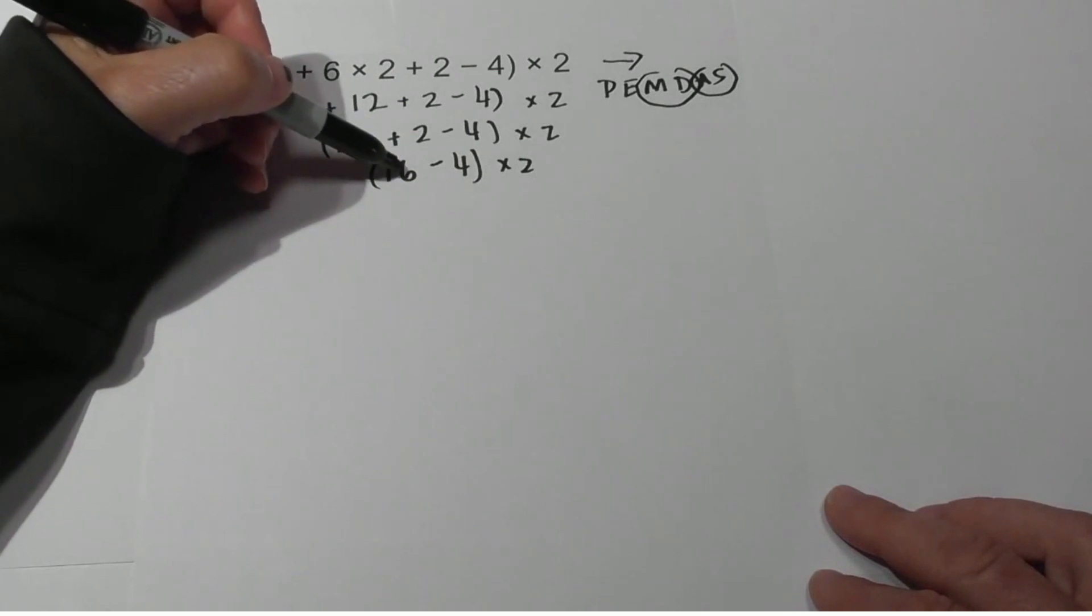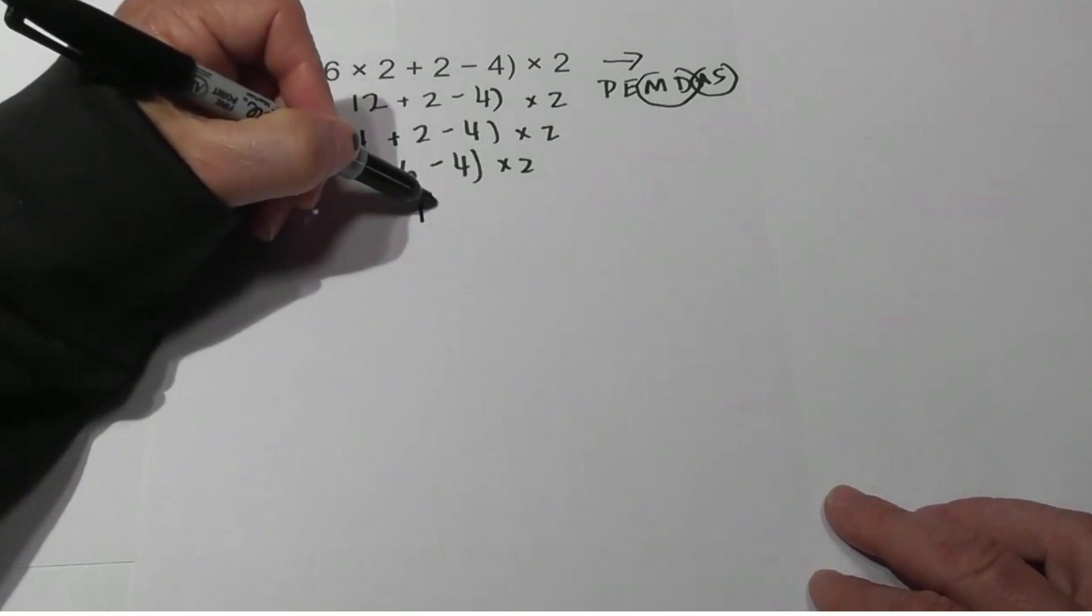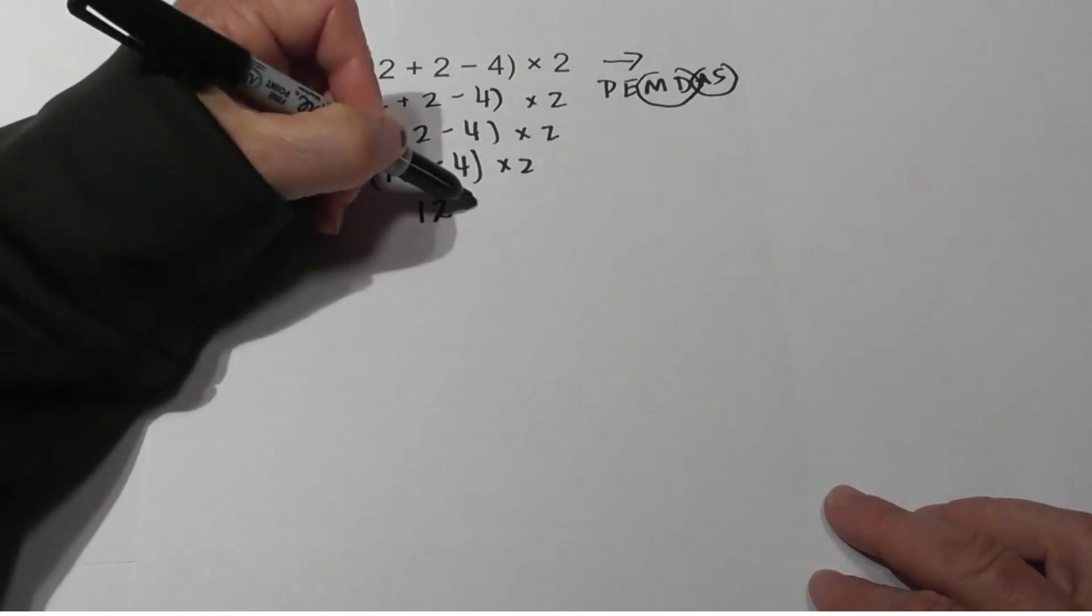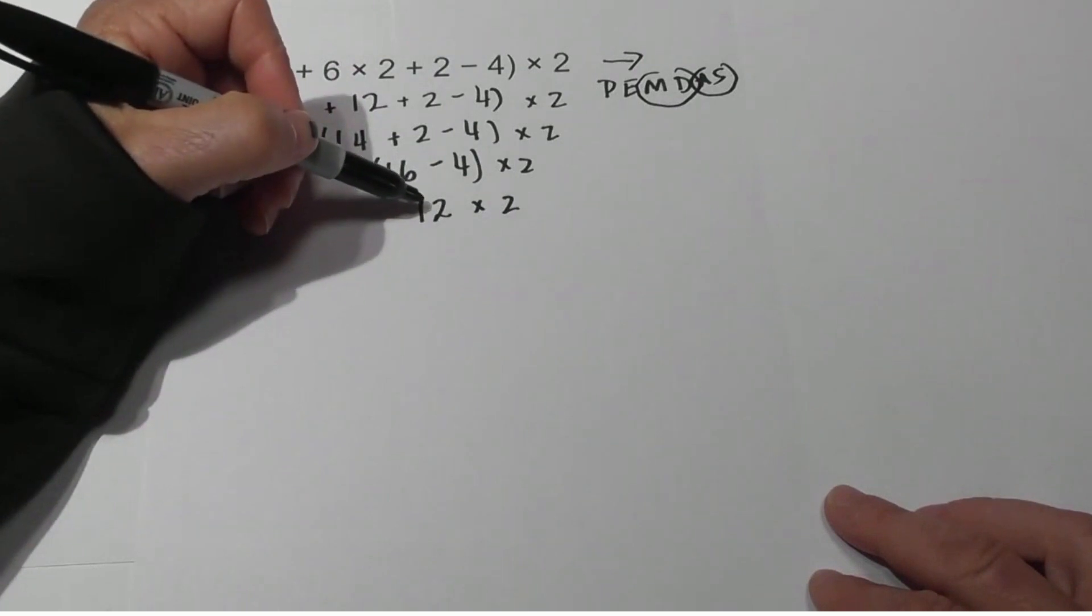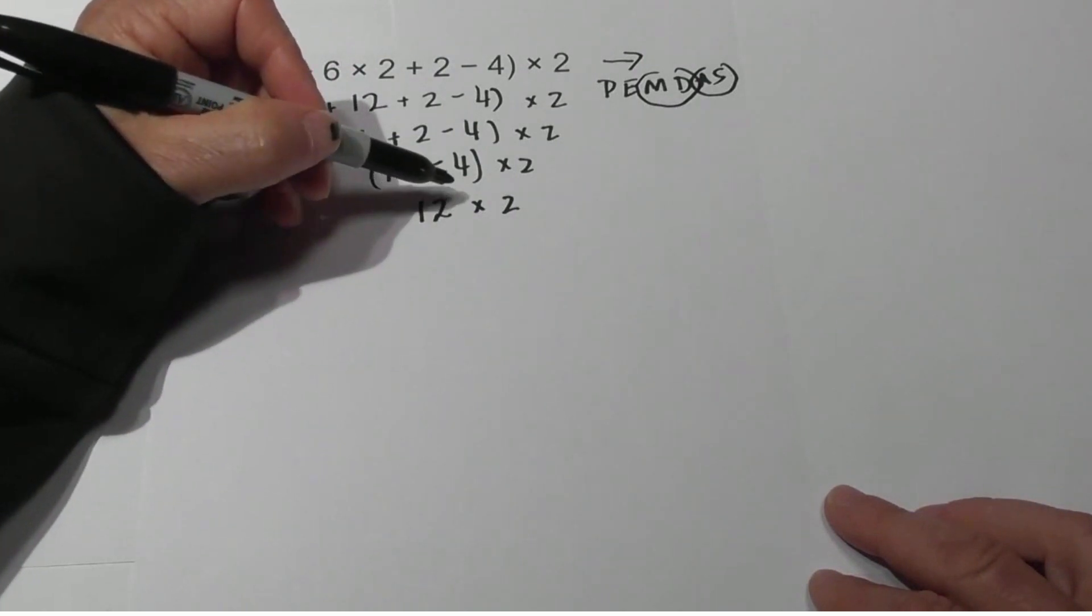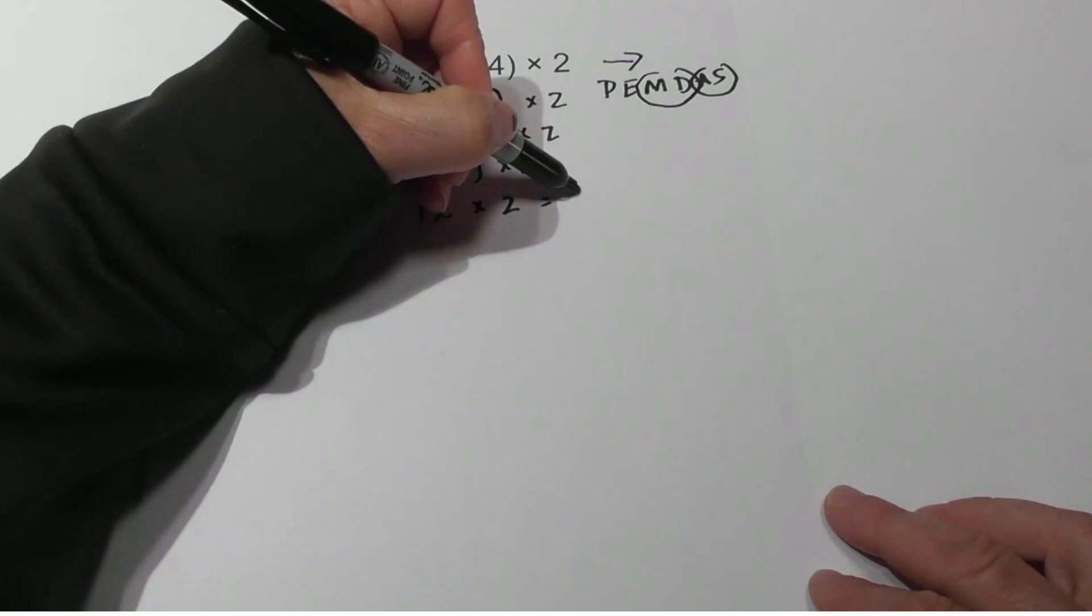Now do we have parentheses? Yes, so we're still working inside the parentheses. Now 16 minus 4 is 12 times 2. So finally we work the multiplication. 12 times 2 equals 24.